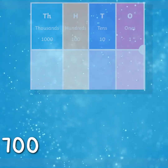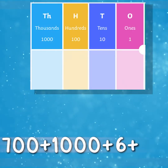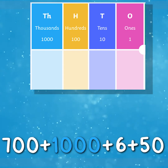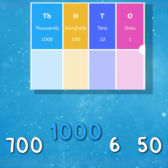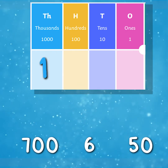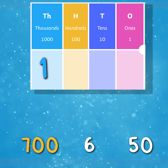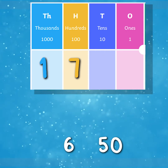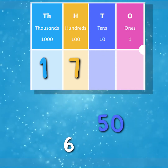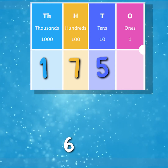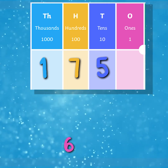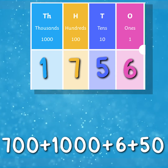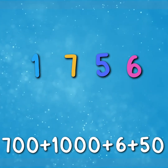How can we represent 700, add one thousand, add six, add fifty on the place value chart? Let's start with one thousand as it's the largest number. We only have one lot of one thousand, therefore we put the digit one in the thousands column. The next largest number is seven hundred — we have seven hundreds, so we put a seven in the hundreds column. In fifty we have five tens, so we put the digit five in the tens column. And finally, we have the six — six lots of one — so we put a six in the ones column. Therefore, seven hundred, add one thousand, add six, add fifty is one thousand seven hundred and fifty-six.